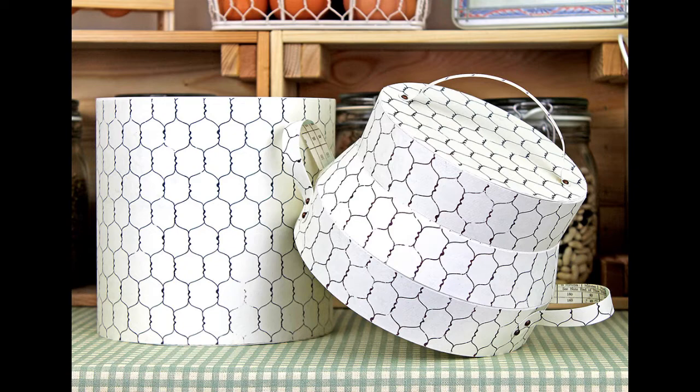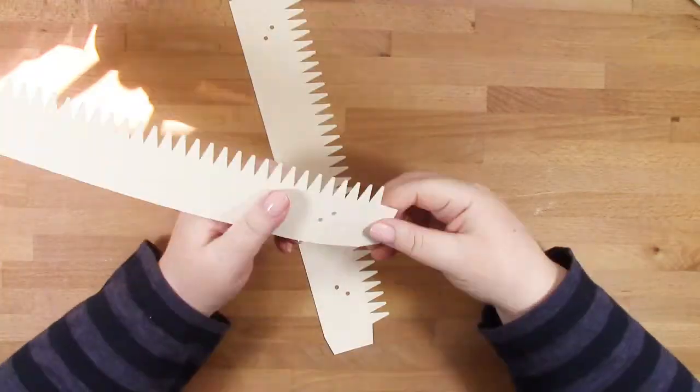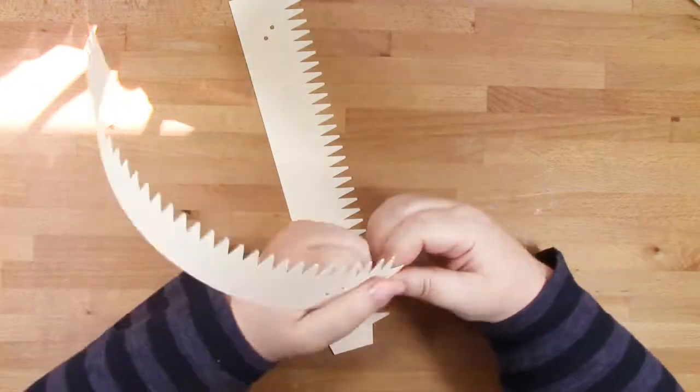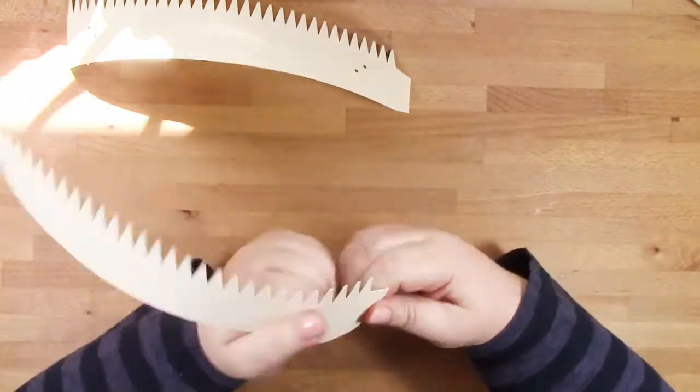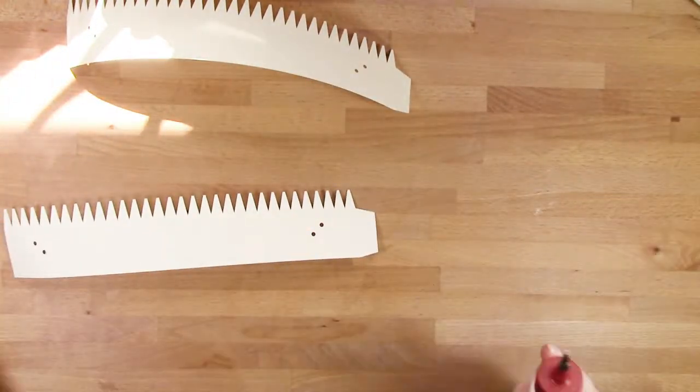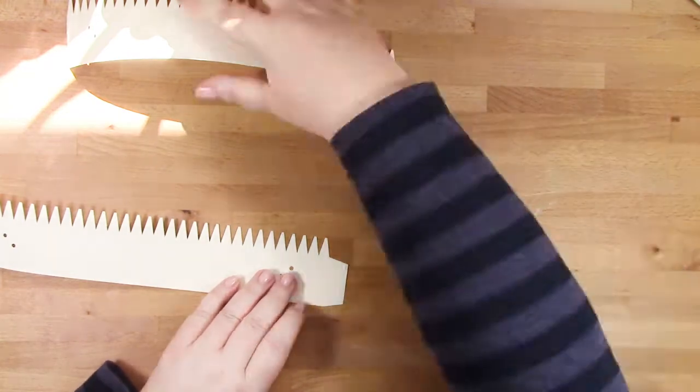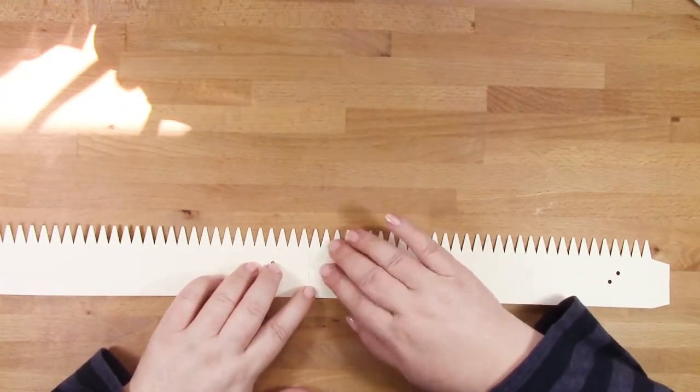First we're going to start with the lid. I'm starting with these two pieces that have teeth on one side and the other side is straight, so this is going to form the bottom of my lid.